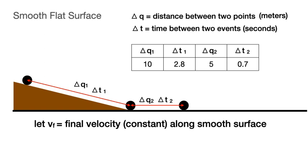Let v sub f equal the final velocity. We make the approximation that for short distances, the velocity is constant along this smooth surface. Then, by definition, v sub f equals delta q sub 2 divided by delta t sub 2, which here equals 7.1 meters per second.